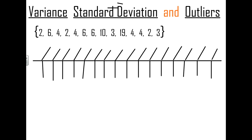All right, variants, here we go. Variance is a measure of how spread out your data is. If you have a huge set of numbers — we have 14 here, and these numbers are from your book representing the number of runs scored by the Yankees or something — what we're going to do is calculate how spread out the data is and then determine if there are any outliers.